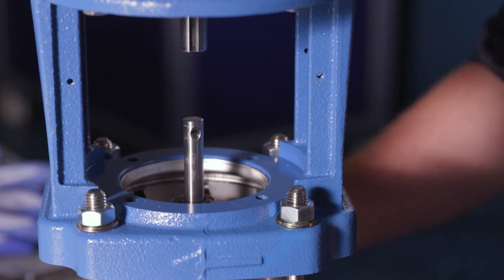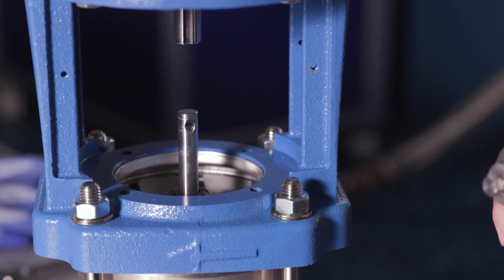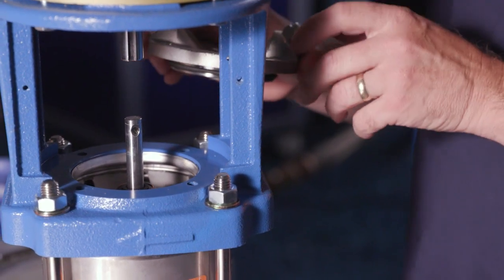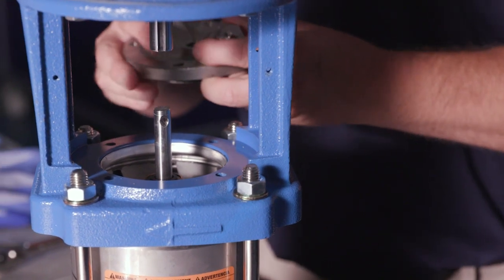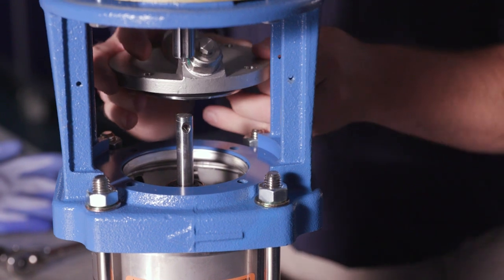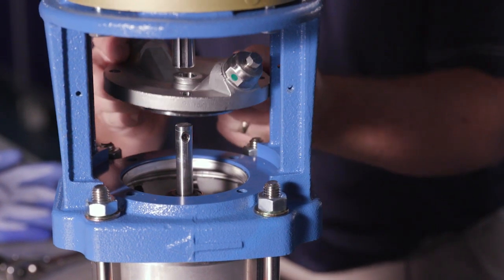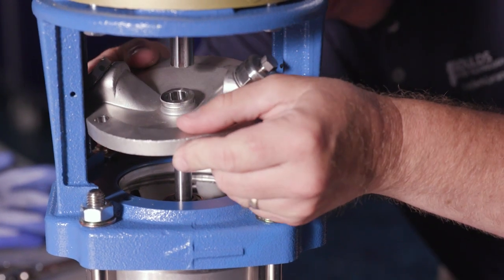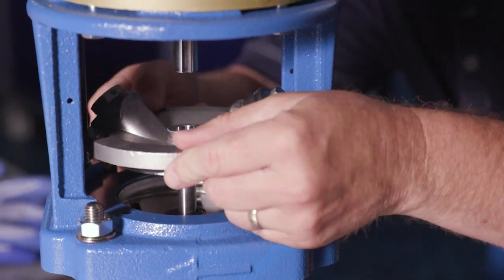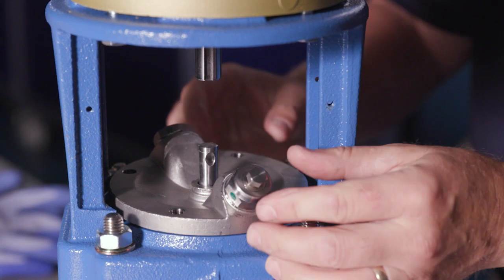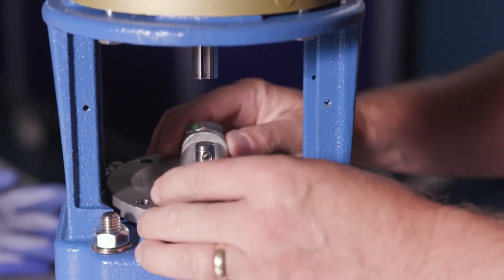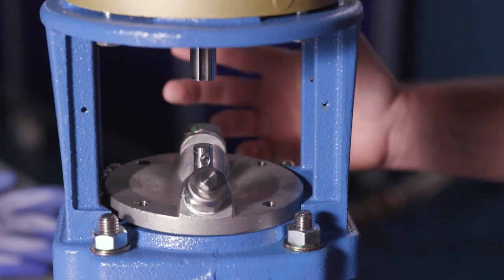Next, we want to take our seal plate and we want to carefully position that over the shaft, making sure that we don't chip that seal. Take your time on that and don't rush it. Make sure that we don't chip that on the install, because a chip is going to mean that it's going to leak.